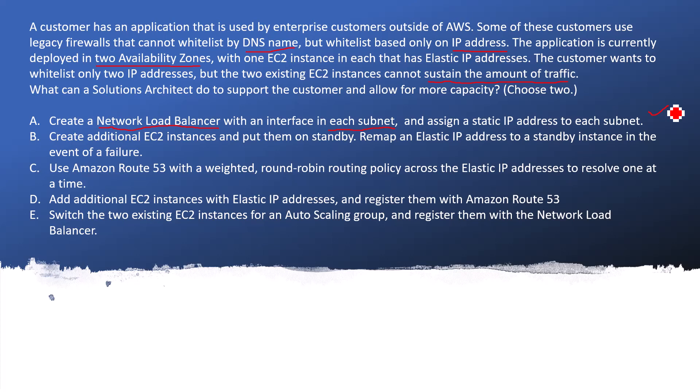Option B: Create additional EC2 instances and put them on standby, then remap an elastic IP address to standby. This is not the right answer. The reason is that standby instances will not be useful to handle your traffic. So I am marking it as wrong.